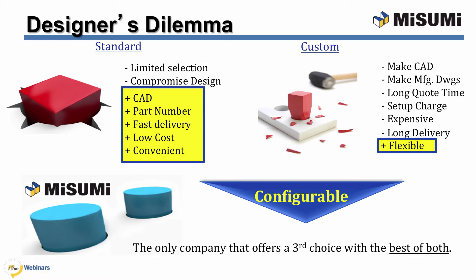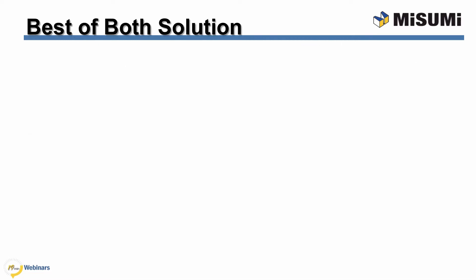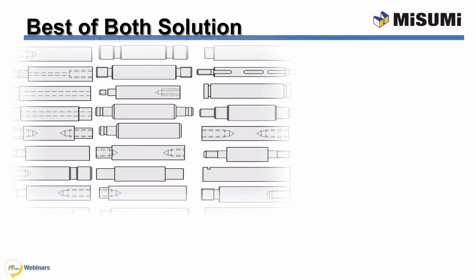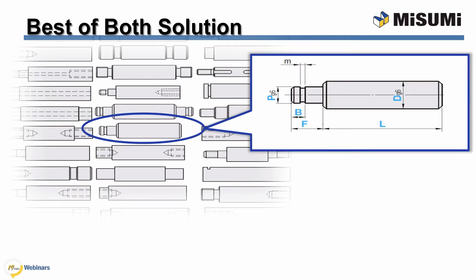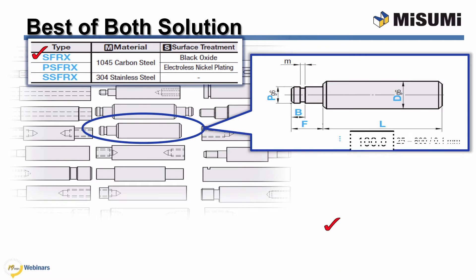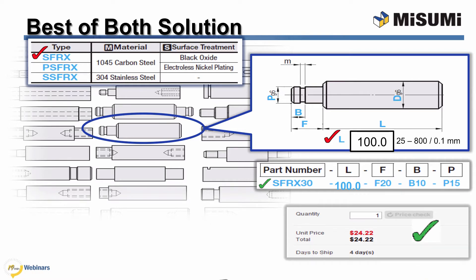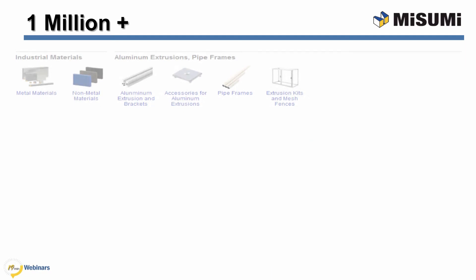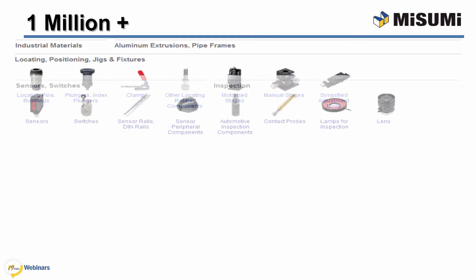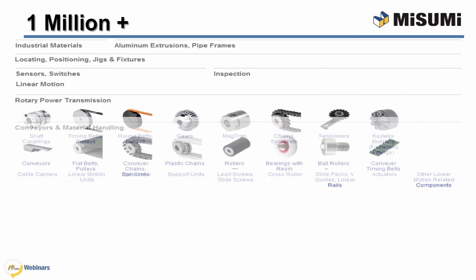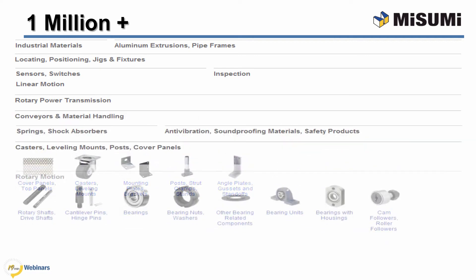Misumi offers configurable, which is the best of both — easy and flexible. Configurable components are easy to design with and purchase. Online, select the product geometry desired, the material and surface finish, and input the size for each configurable dimension within the range and increments shown. You'll get a smart part number, instant price and days to ship, and the CAD model. All of this configurability is available with our over 1 million components, available at MisumiUSA.com.